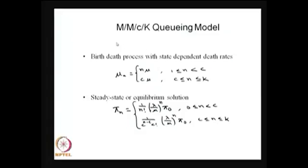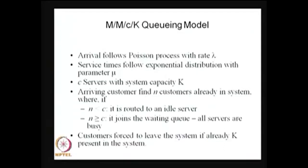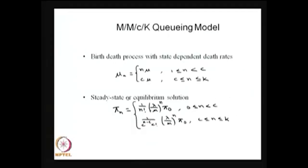The underlying stochastic process here is the number of customers in the system at any time T. This stochastic process is a continuous-time Markov chain because inter-arrivals are exponentially distributed, each service by each server is exponentially distributed, and all are independent. At any time only one forward or one backward move can occur.